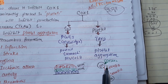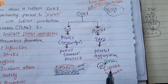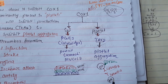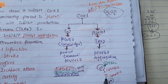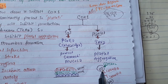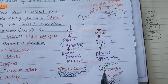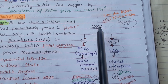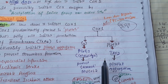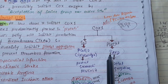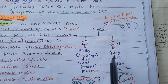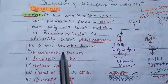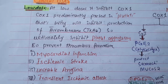Thromboxane activates platelets to increase glycoproteins IIa and IIIb, which allow them to attach to another platelet and another — this is called platelet aggregation — and they can form a thrombus. That's why low-dose aspirin is used as an antiplatelet: it inhibits COX-1, ultimately inhibiting the production of thromboxane (TXA2) and thus inhibiting platelet aggregation.